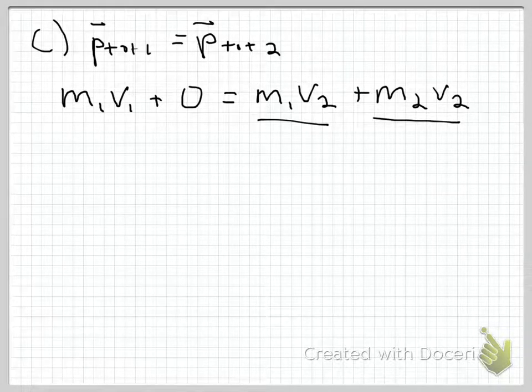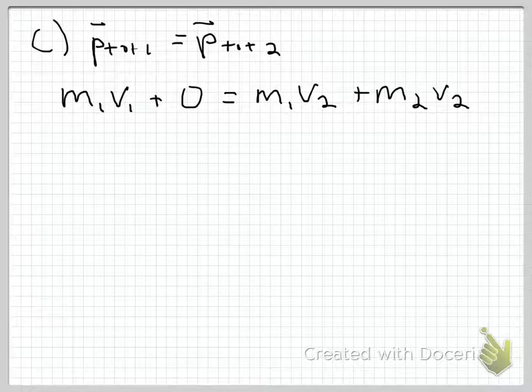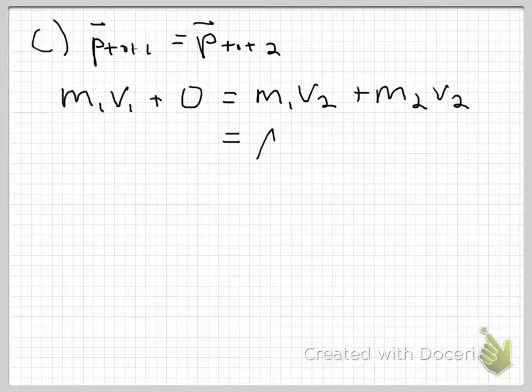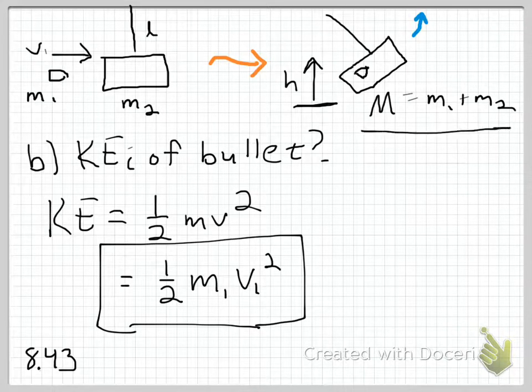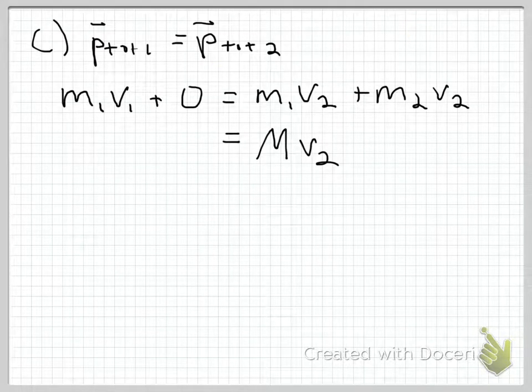Equals M1 V2 plus M2 V2, where this term is the momentum of the bullet afterwards, and this term is the momentum of the pendulum afterwards. Because they're sticking together, we have an inelastic collision and we're going to require their velocities to be equal, which is why I've subscripted these speeds with a 2. I can factor that out and write it as big M V2, where big M is just the summation of the mass of the bullet and the mass of the pendulum.